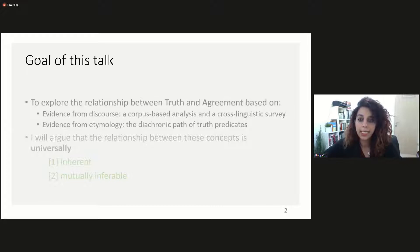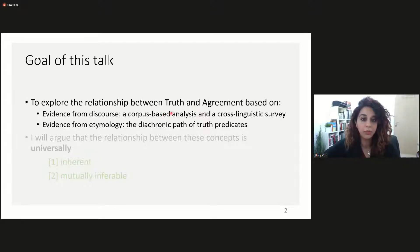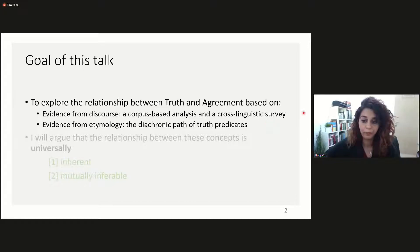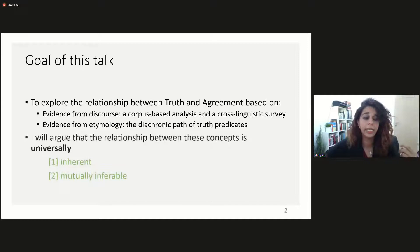To be a bit more precise, the goal of this talk is to explore the relationship between truth and agreement based on evidence from discourse. In this part I will present findings from a corpus-based analysis of the English predicate 'true'. I will then corroborate those findings using a cross-linguistic survey of predicates similar to 'true', and I will also provide evidence from etymology. Based on these various sources of evidence, what I will want to argue is that the relationship between truth and agreement is universally both inherent and mutually inferable.